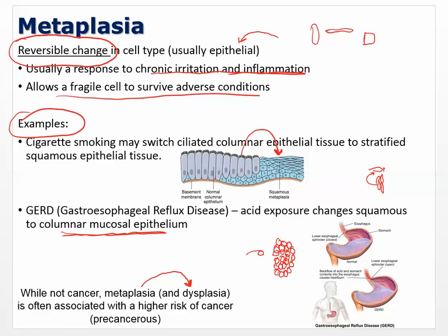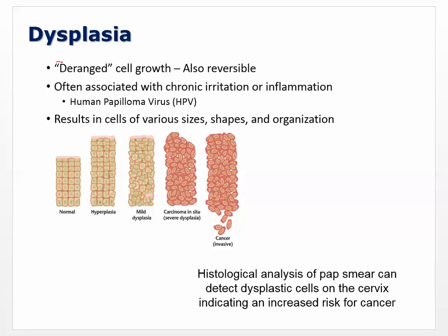Dysplasia is the last one — deranged cell growth. This is also reversible, which is an important thing to remember. It's often associated with chronic irritation or inflammation. Human papillomavirus (HPV) is associated with an increased risk of cervical cancer. How do we test for cervical cancer? We do a pap smear, scraping cells from the cervix and testing them to see if they have any hyperplasia or dysplasia.